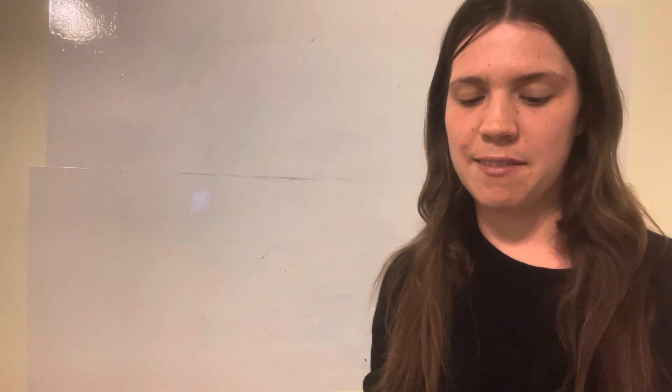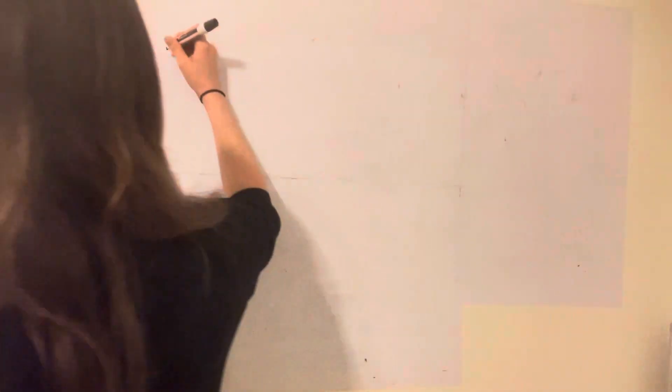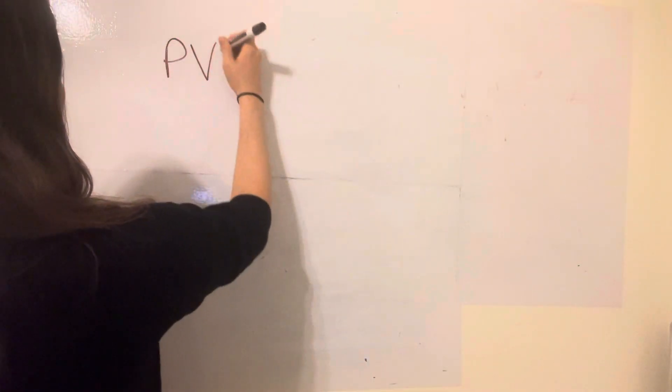First, let's write down the information that we have. We know that our present value is $600, so that's going to be PV equals 600.